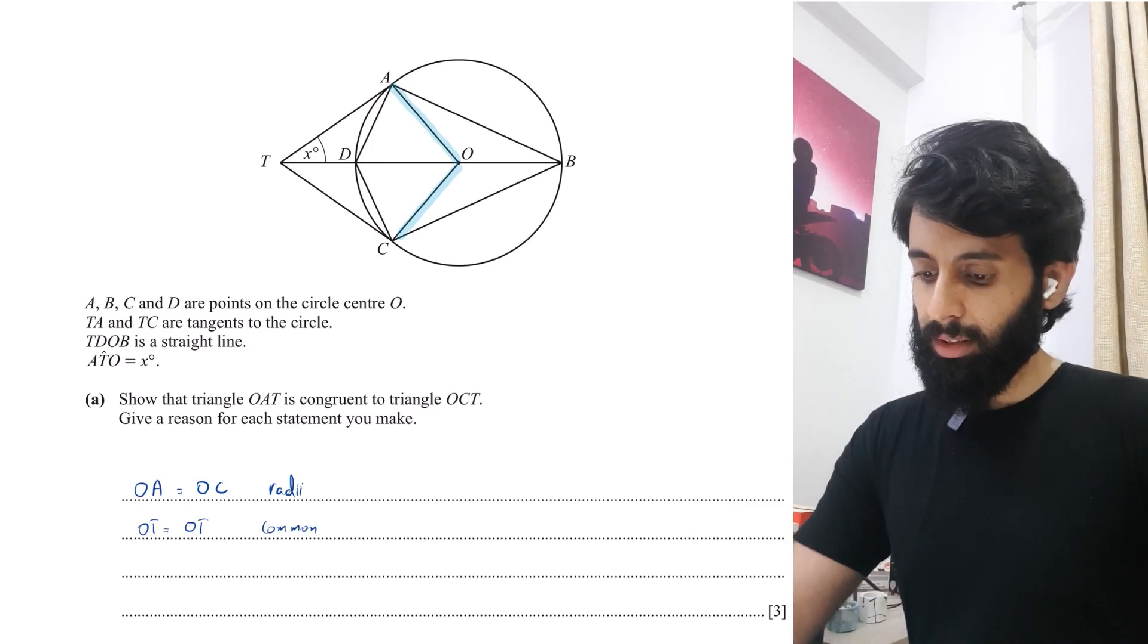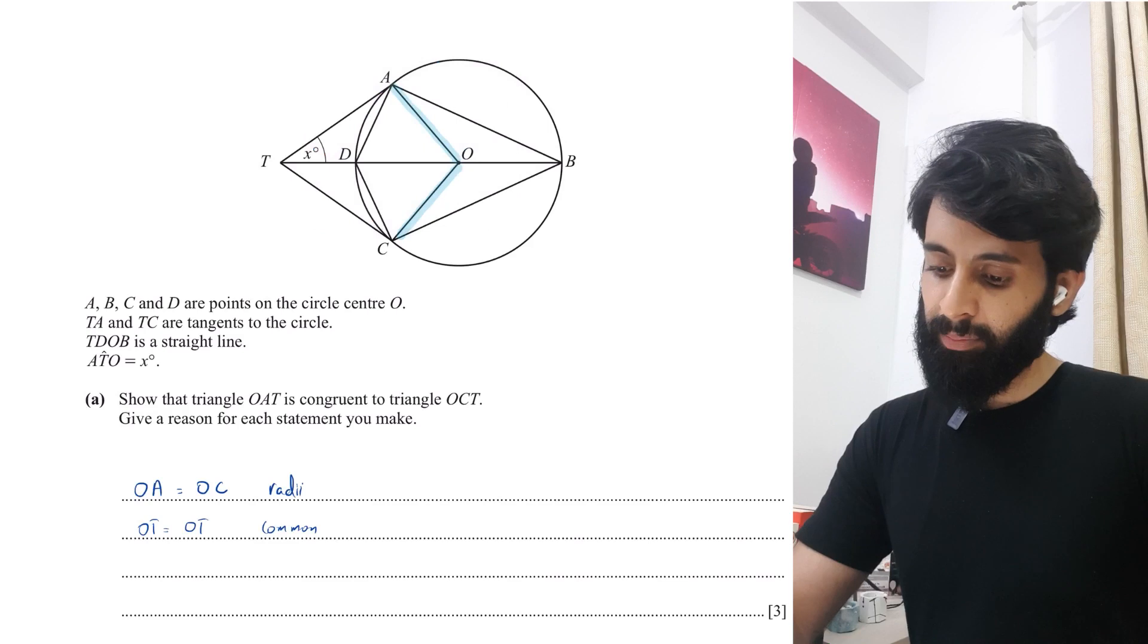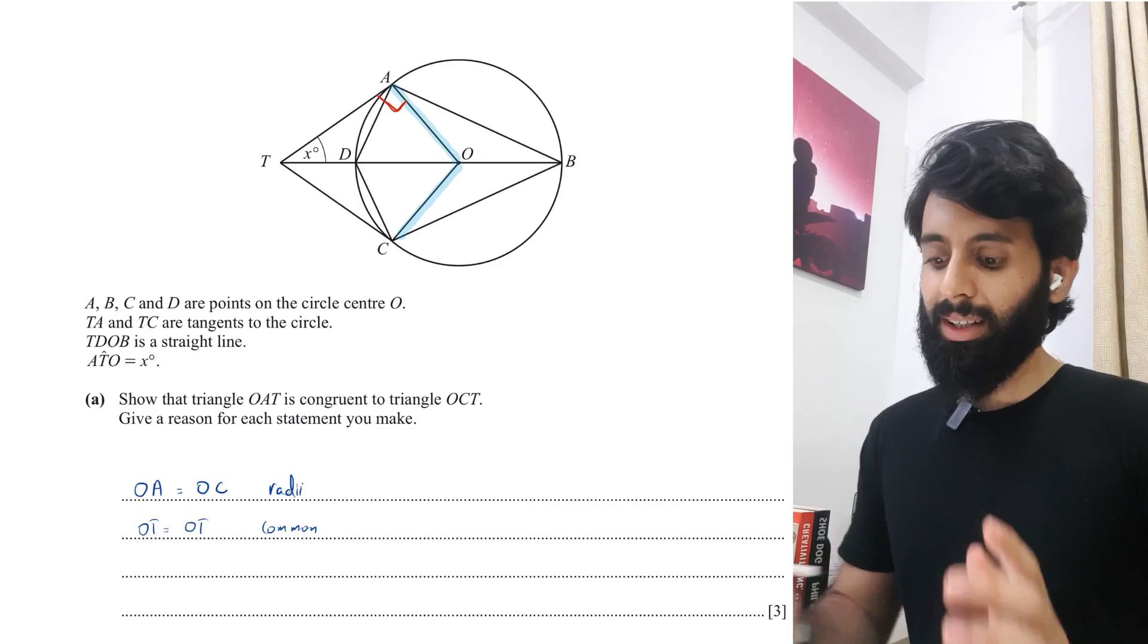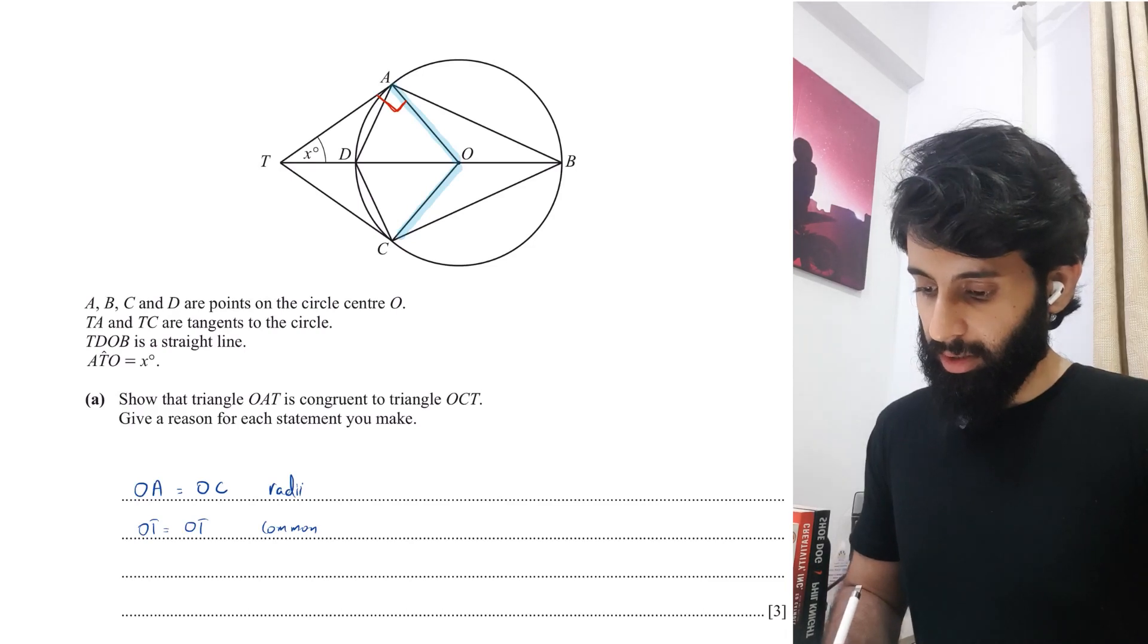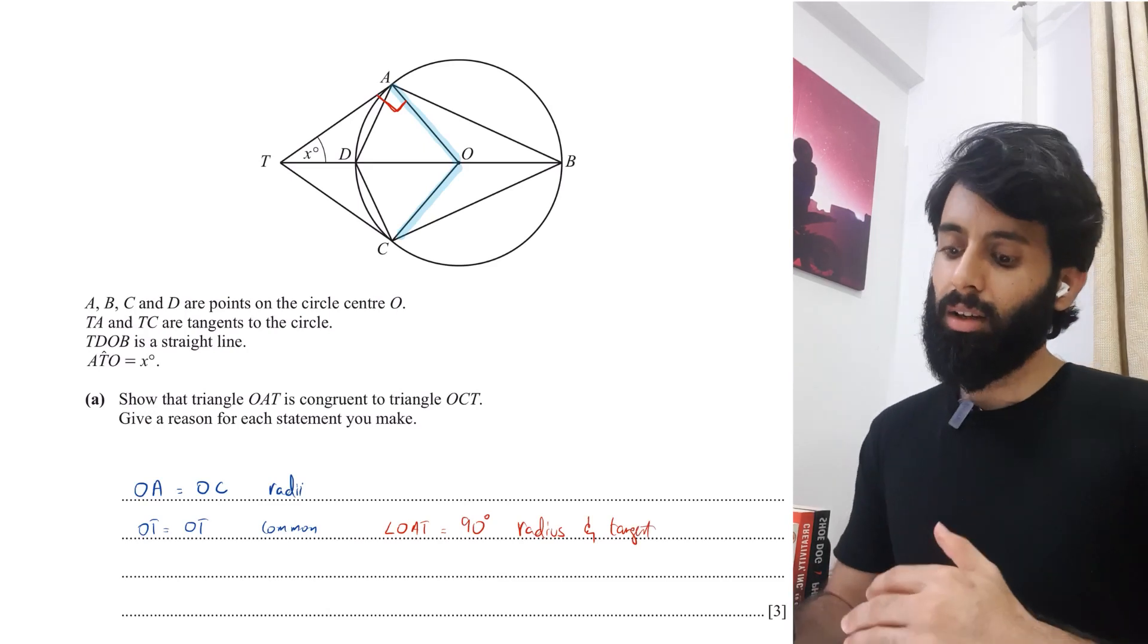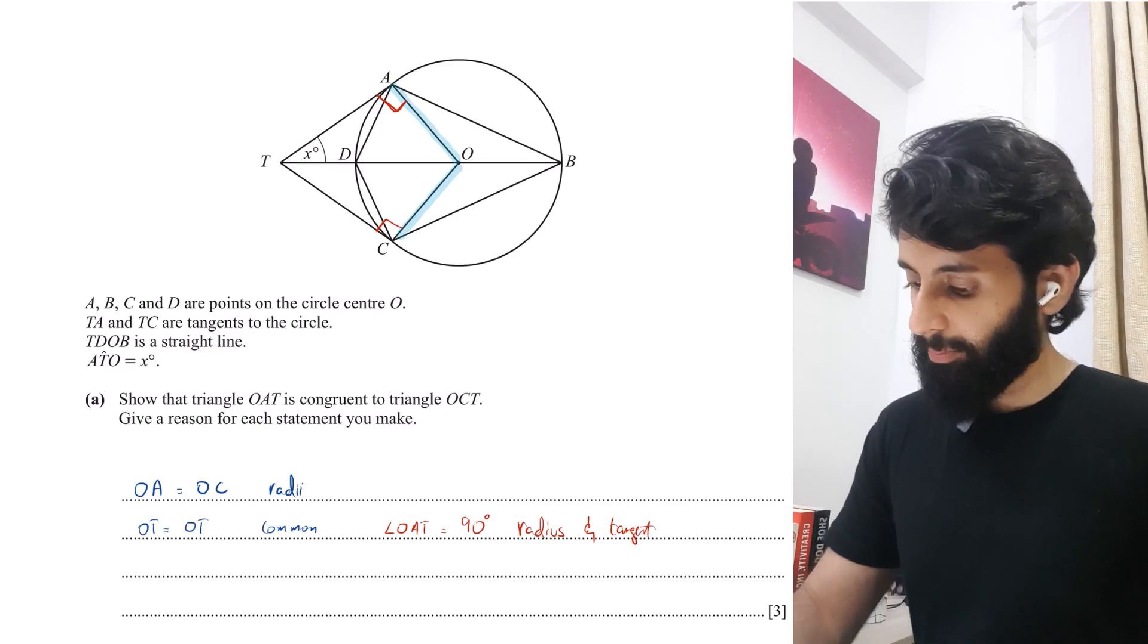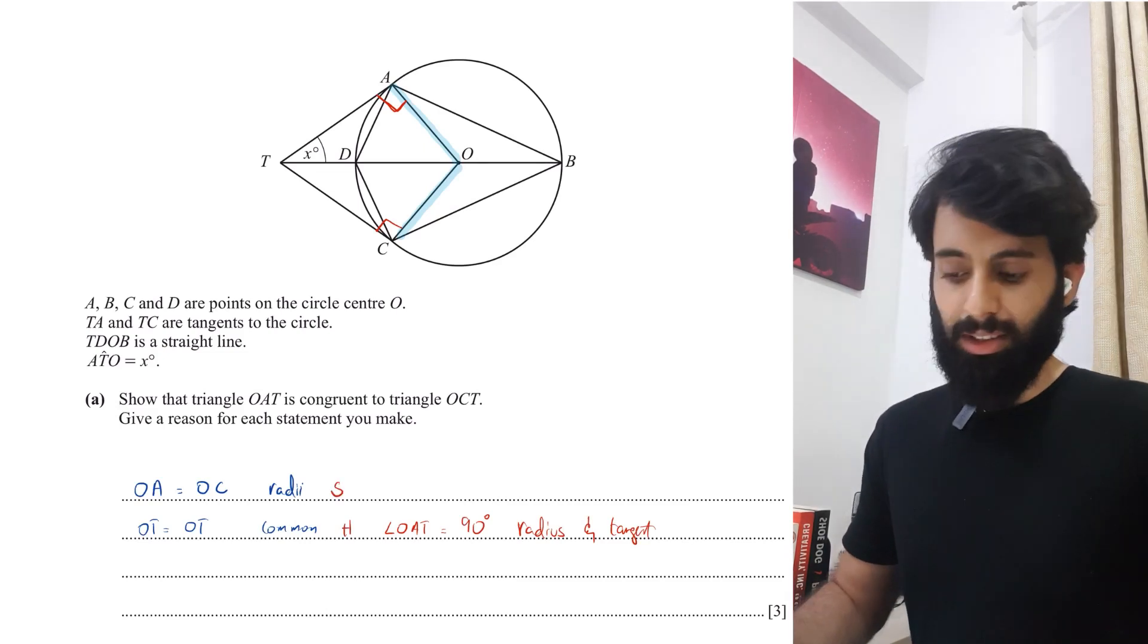Keep in mind that OT, although it's a common side, is also the hypotenuse. Why exactly is that? Because this angle right here needs to be 90 degrees. Why? Because it is radius and tangent. This is the point at which radius and tangent meet. So angle OAT equals 90 degrees because this is the point where radius and tangent meet. And it's not just angle OAT which is going to be 90 degrees. OCT also has to be 90 degrees.